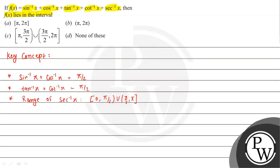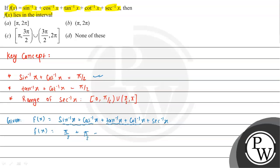We will use these three concepts to solve this question. What we have given is f(x) = sin inverse x plus cos inverse x plus tan inverse x plus cot inverse x plus sec inverse x. We can see f(x) is equal to π/2 — from the first pair — plus π/2 from tan inverse x plus cot inverse x, plus sec inverse x.